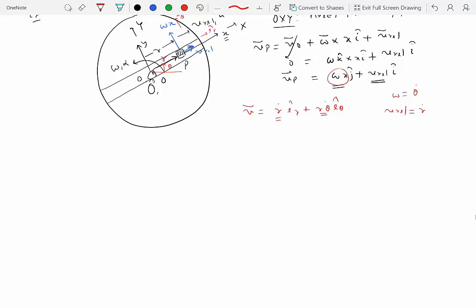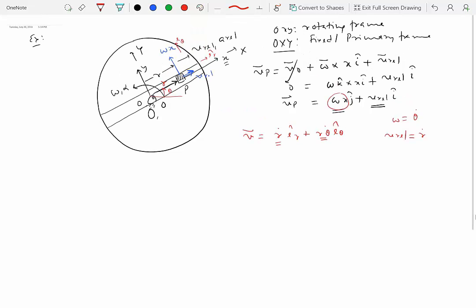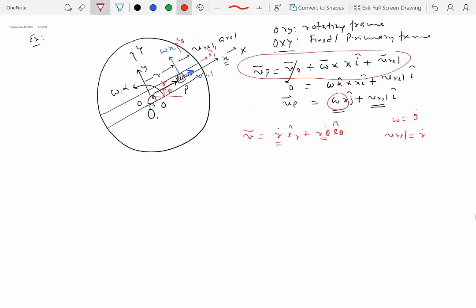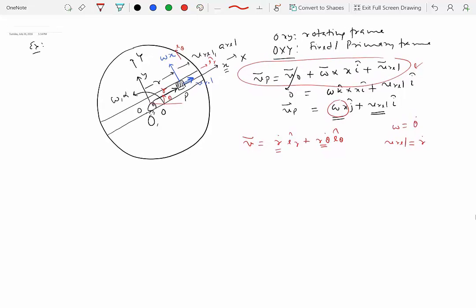So you may ask why do we need to use this big relationship to do the velocity analysis when we can use R theta system. So yes for this particular problem you can definitely use R theta system but it turns out that when you have slightly more complicated problem, multiple rigid bodies, multiple motions, then using R theta system may not be a very easy way to solve the problem. So in that case we will resort to using our relative velocity and acceleration equation that we have obtained in this particular module.